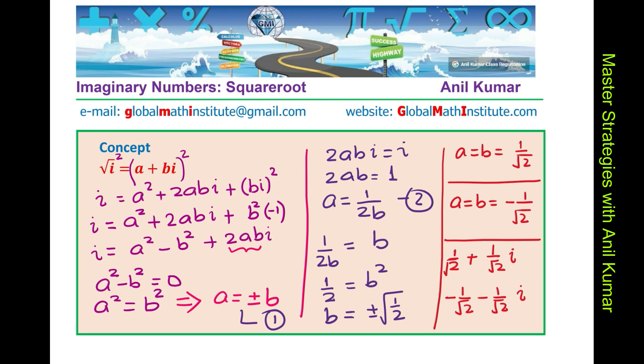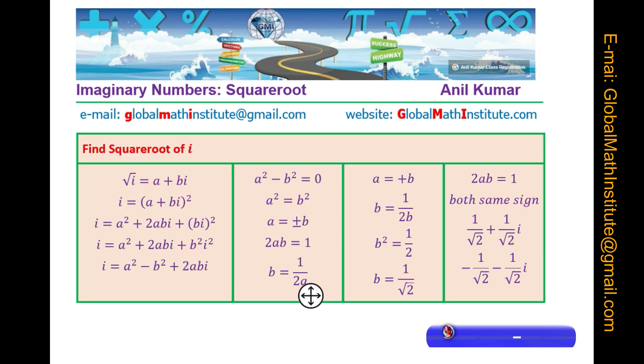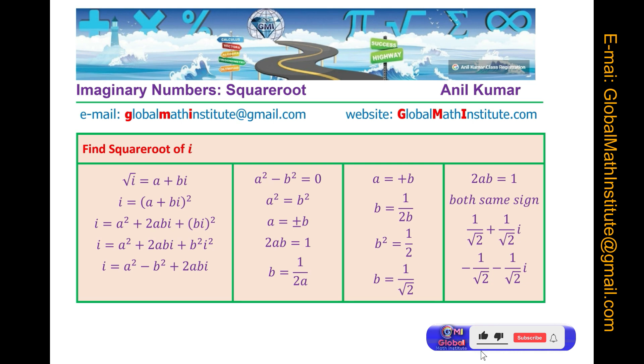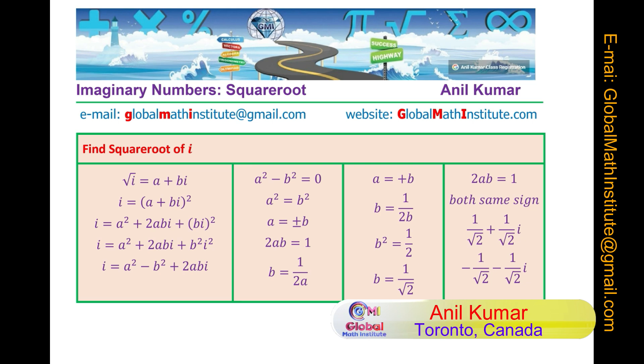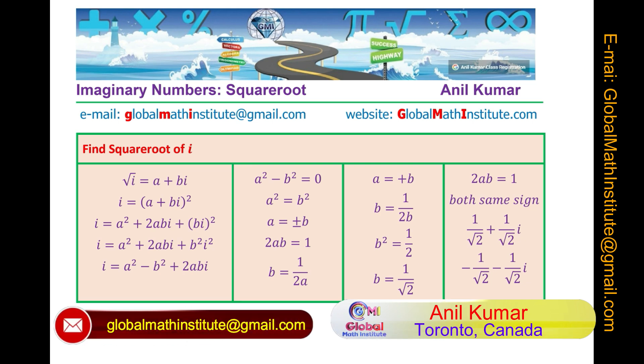So, that is how we are going to solve this particular question. So, I hope the solution is absolutely ready. Now, what you can do is have a good look as I have typed out the whole solution for you. So, basically, we began with square root i equals to a plus bi, squared both the sides and then compare the imaginary and the real parts.